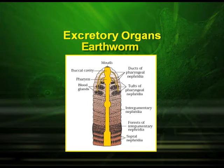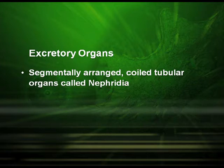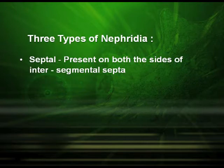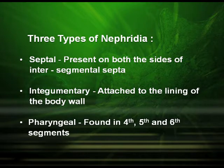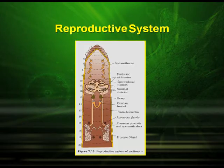The excretory organs of earthworm include the segmentally arranged coiled tubular organs called the nephridia. There are three types of nephridia: the septal, the integumentary, and the pharyngeal. The septal nephridia are present on both sides of the intersegmental septa. The integumentary nephridia are attached to the lining of the body wall, and the pharyngeal nephridia are found in the fourth, fifth, and sixth segments.